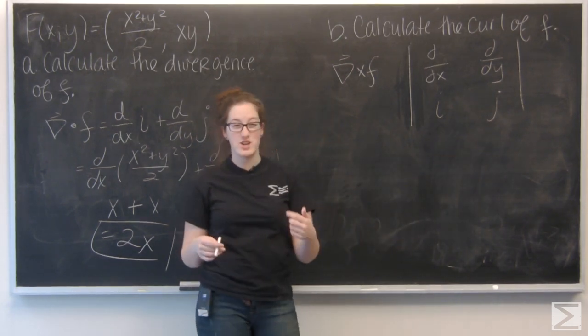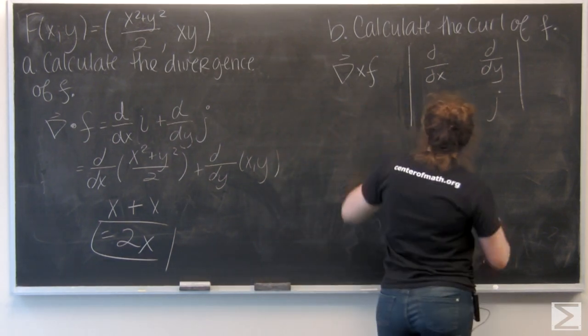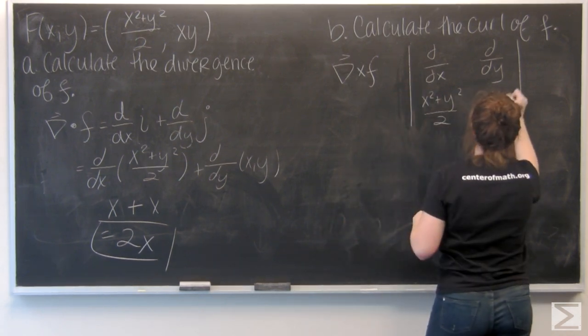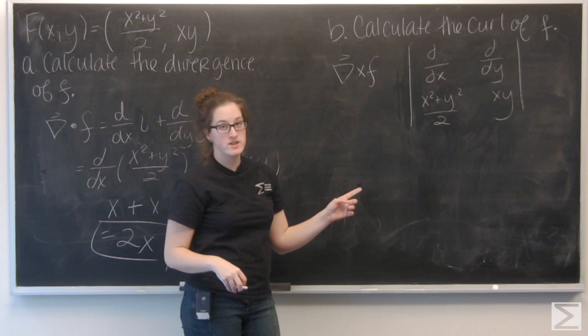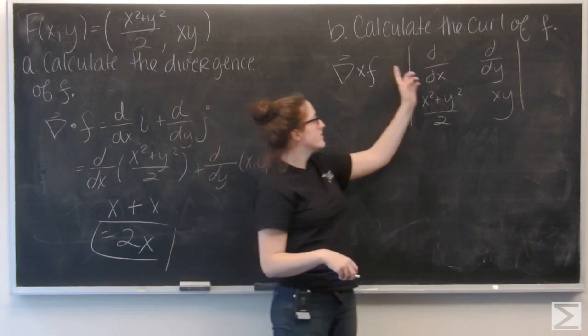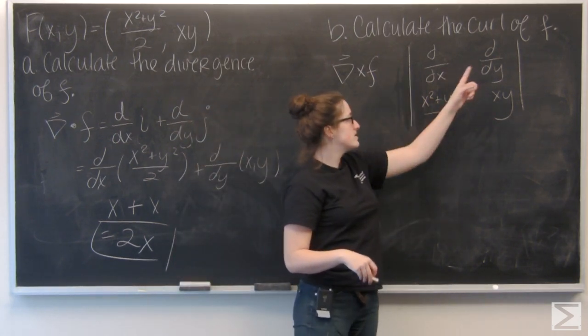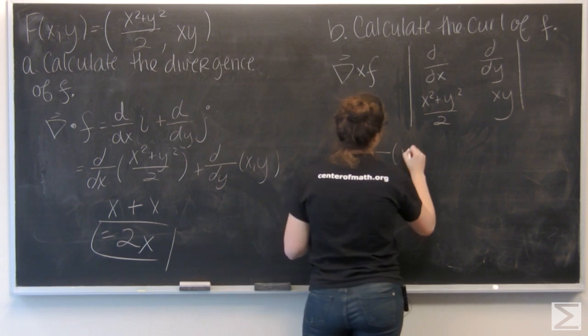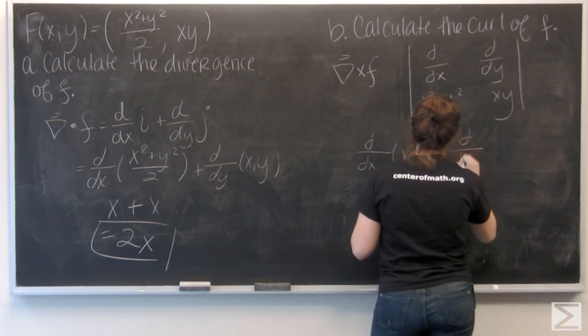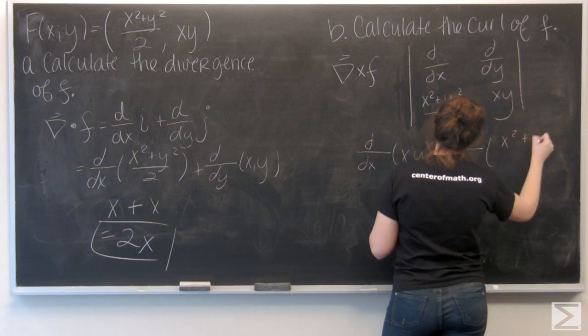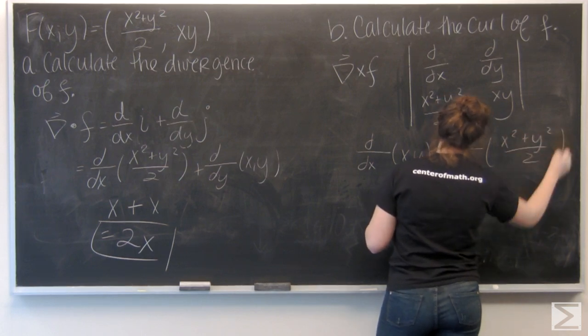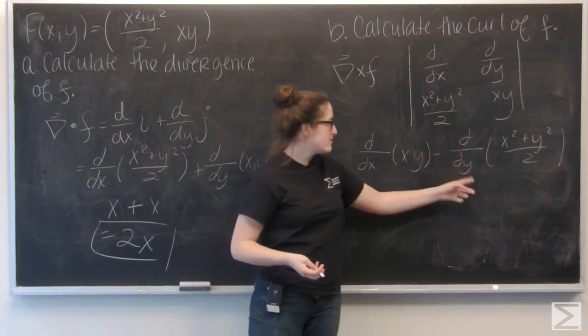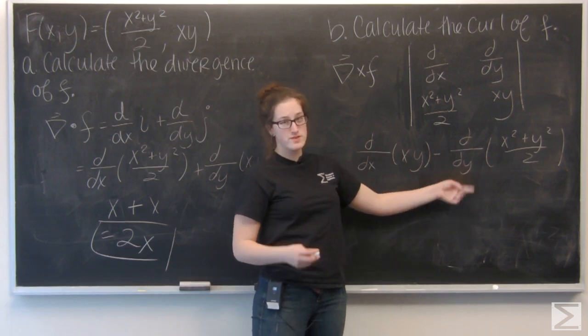So let's plug in the i and j components for this particular function. And take the determinant. So recall, multiply on the main diagonal and then subtract the products of the other diagonal. So I have the partial derivative of xy with respect to x minus the partial derivative of x squared plus y squared over 2 with respect to y.